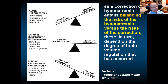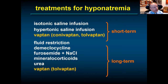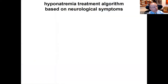Treatment options include short-term isotonic or hypertonic saline, vasopressin antagonists conivaptan and tolvaptan, long-term fluid restriction, demeclocycline, salt tablets with furosemide, urea, and mineralocorticoids. Long-term fluid restriction has been the traditional treatment of choice, but its efficacy is limited as we'll see. Urea has become increasingly popular. For long-term therapy, the oral vaptans tolvaptan and conivaptan are available, though conivaptan can only be used in the inpatient hospital setting.